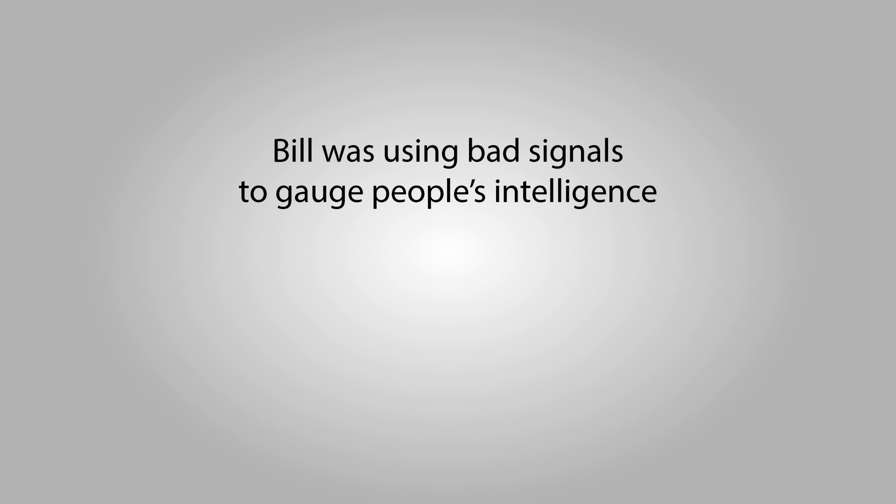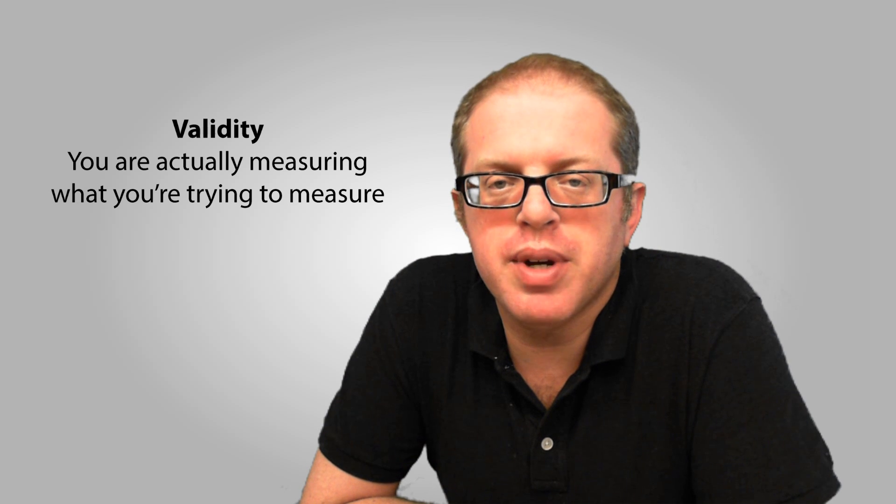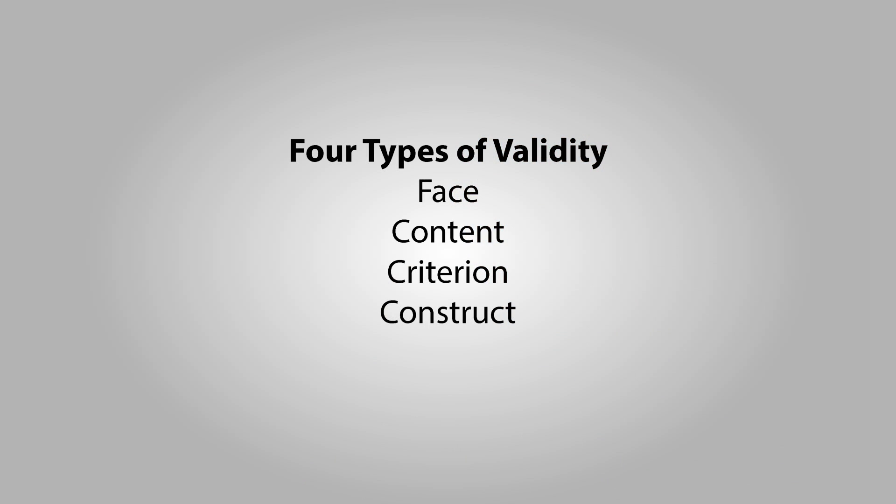Bill's problem was that he was using bad signals to guess people's intelligence — he was using measures with validity problems. Validity means that you're measuring what you're trying to measure in your research project. In this video, I'll describe some often-encountered validity problems. If you know what they are, you can be cognizant about them in your research design and hopefully avoid creating surveys with invalid measures. I'll talk about four types of validity: face, content, criterion, and construct, and how to assess your measures in light of these four criteria.